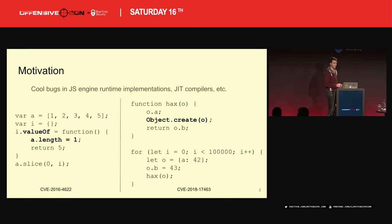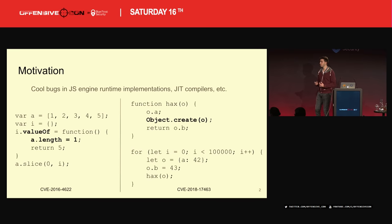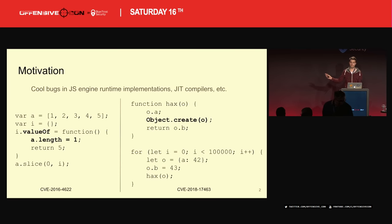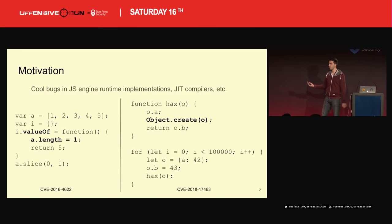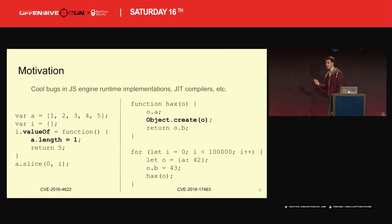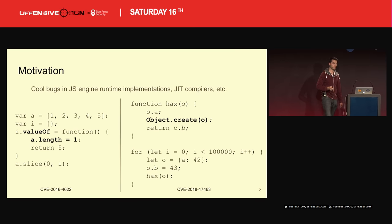Starting with some motivation on this slide. You can see two proof of concepts for fairly common JavaScript engine bugs. It's not really important what the bug is in particular — you have the CVE numbers, you can look them up. But this is just to give you an idea of the kind of code we are trying to find through fuzzing.